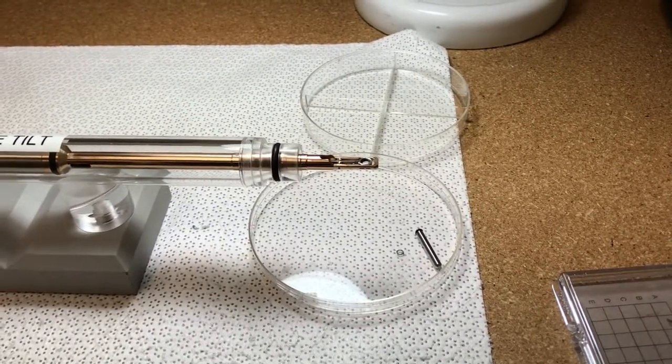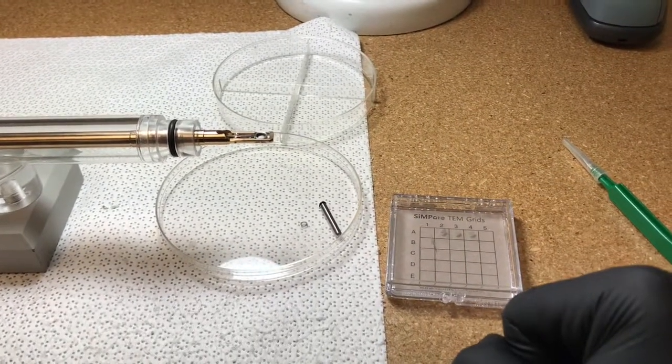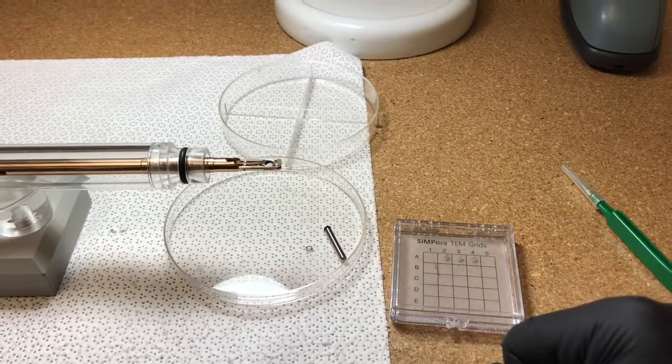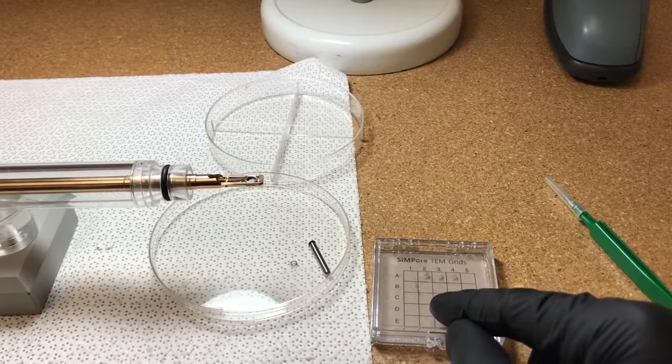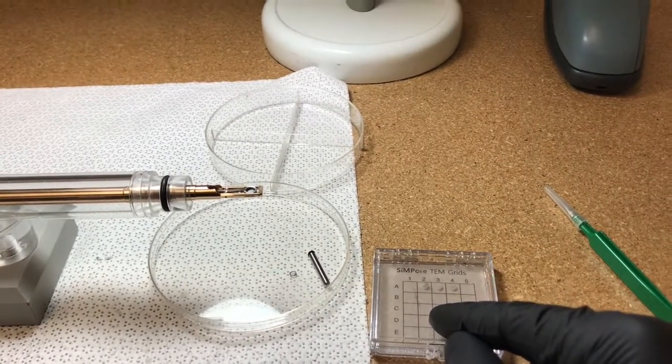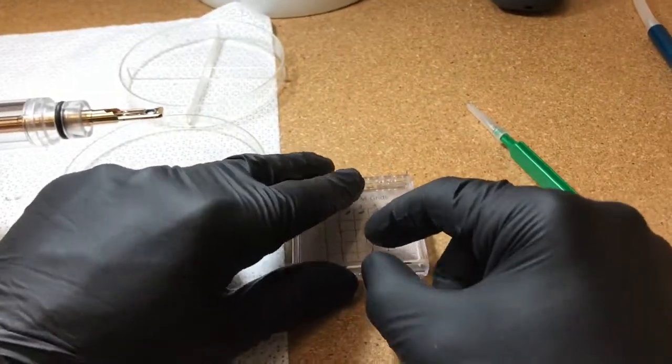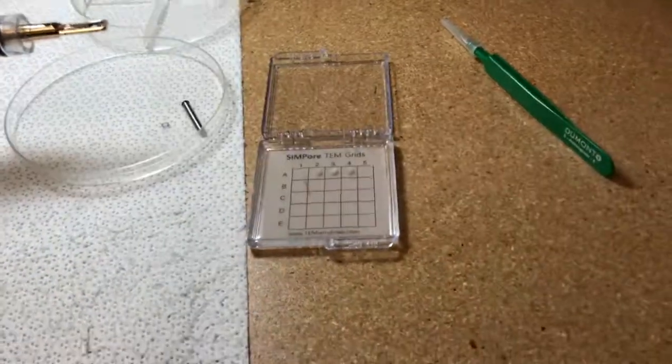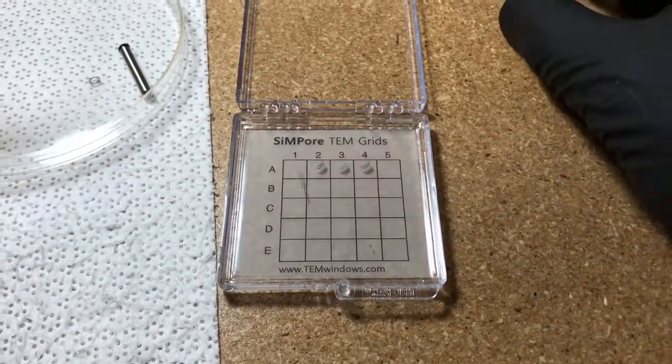Now we have to put the sample in. The samples we're going to use today are specimens prepared by FIB, so they are on omniprobe grids. I have some of them here that have been stored in a gel pack box, which is how I recommend that you store these grids.